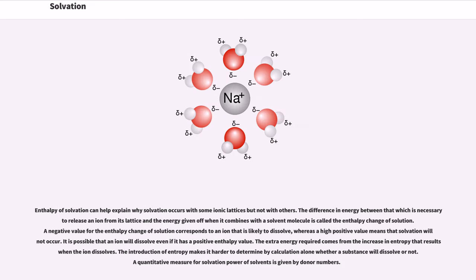The enthalpy of solvation can help explain why solvation occurs with some ionic lattices but not with others. The difference in energy between that which is necessary to release an ion from its lattice and the energy given off when it combines with a solvent molecule is called the enthalpy change of solution. A negative value for the enthalpy change of solution corresponds to an ion that is likely to dissolve, whereas a high positive value means that solvation will not occur.